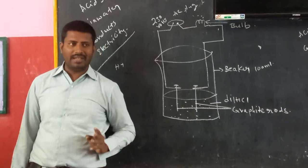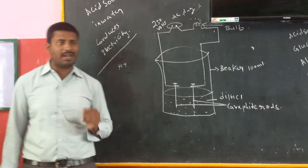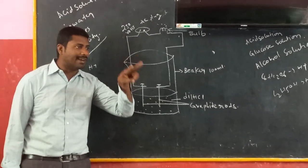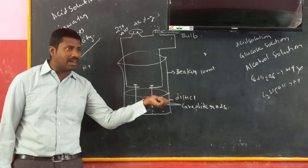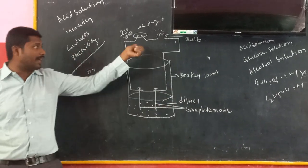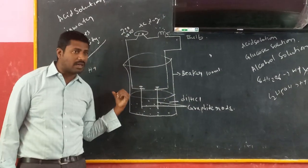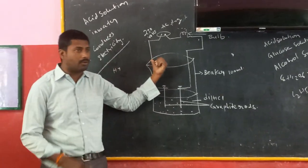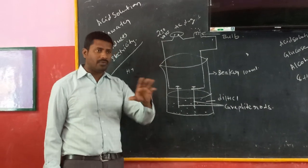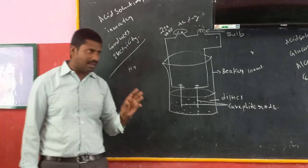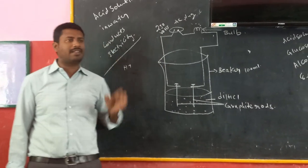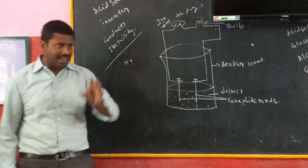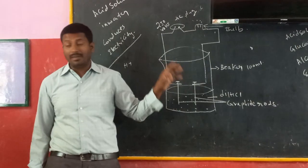I repeat once again: on the day of experiment, take a 100 ml beaker and add acidic solution in that beaker. Take two graphite rods — one end connected to the bulb and the other end connected to the 230 volts AC plug. Then HCl produces H+ ions, and these H+ ions conduct electric current. As a result, the bulb glows.